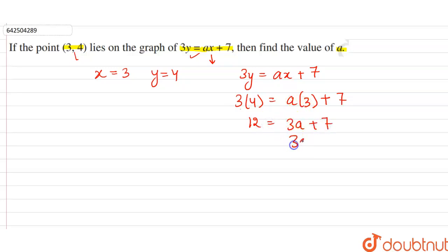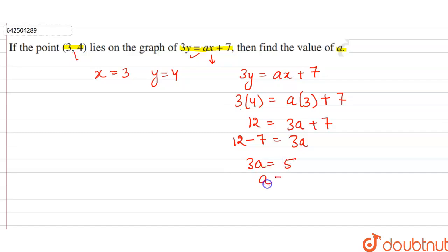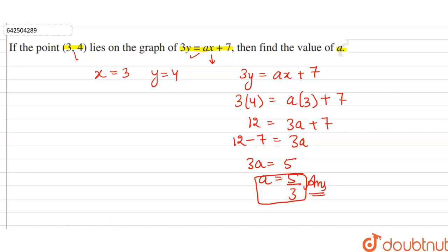So 3a will be equal to 12 minus 7, which is 5. So a will be equal to 5 divided by 3. Our answer is a = 5/3.